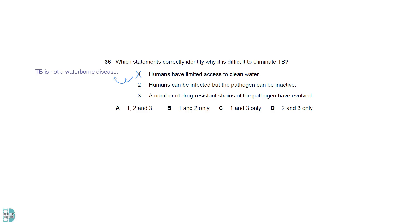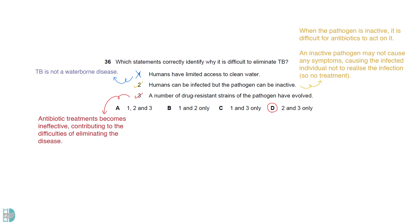TB is not a waterborne disease, so 1 is irrelevant. Statement 2 is correct because when the pathogen is inactive, it is difficult for antibiotics to act on it. Besides, an inactive pathogen may not cause any symptoms, causing the infected individual not to realize the infection. Drug-resistant pathogen causes antibiotic treatments to be ineffective, contributing to the difficulties of eliminating the disease.